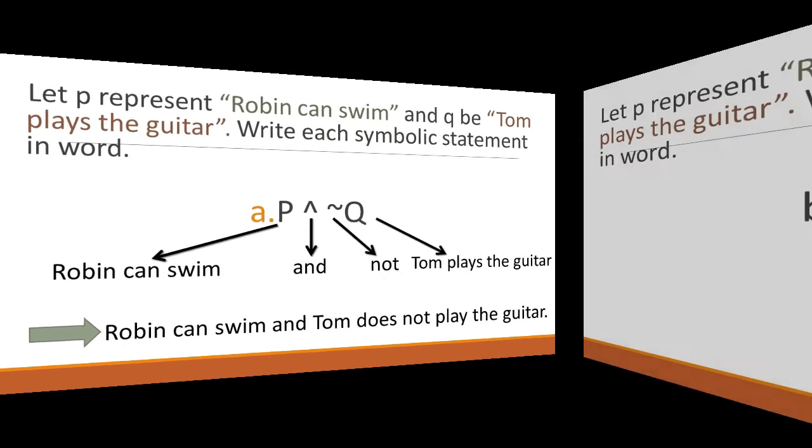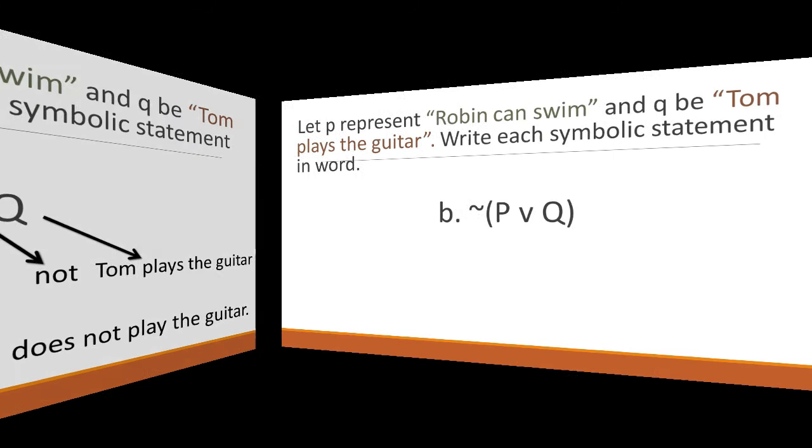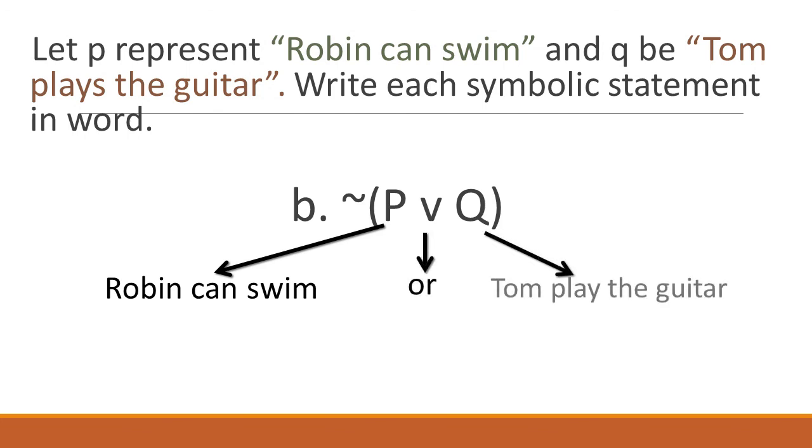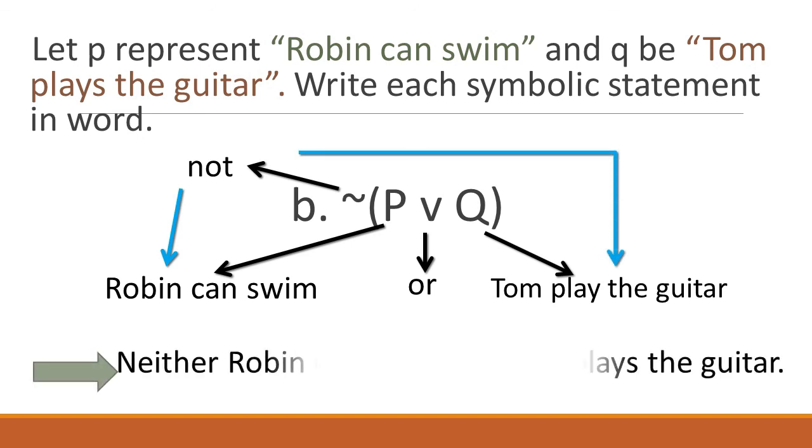Negate open parenthesis P small letter V Q. We are going to change P with 'Robin can swim,' and also change the small letter V with 'or.' Letter Q will be converted to 'Tom plays the guitar.' Like our discussion last midterms, we will distribute the negation to both P and Q. Excellent. Our statement would be 'neither Robin can swim nor Tom plays the guitar.'